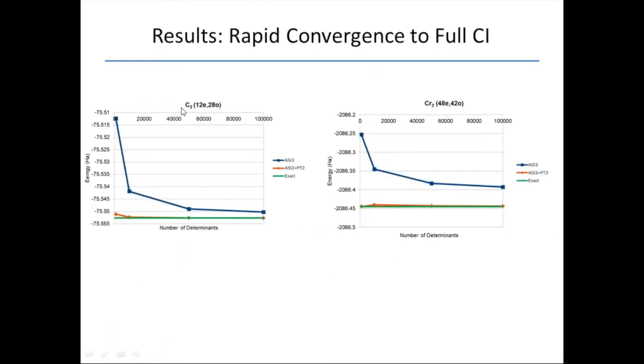Let's look at some results. Here's C2, 12 electrons and 28 orbitals. That's about 140 billion determinants. Here in dark blue is the ASCI energy, the variational part, and in orange is the ASCI plus PT2 energy. That's including the perturbation correction for the remainder part of the Hilbert space that we haven't explicitly included. In green is the exact DMRG results. You can see that even though this Hilbert space is hundreds of billions, with only 10,000 determinants, or 50,000, you're at millihartree accuracy with the exact results. This only takes a handful of seconds to run.